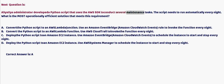Next question: A SysOps administrator developed a Python script that uses the AWS SDK to conduct several maintenance tasks. The script needs to run automatically every night. What is the most operationally efficient solution? Option A: Convert the Python script to an AWS Lambda function and use an Amazon EventBridge (CloudWatch Events) rule to invoke the function every night.